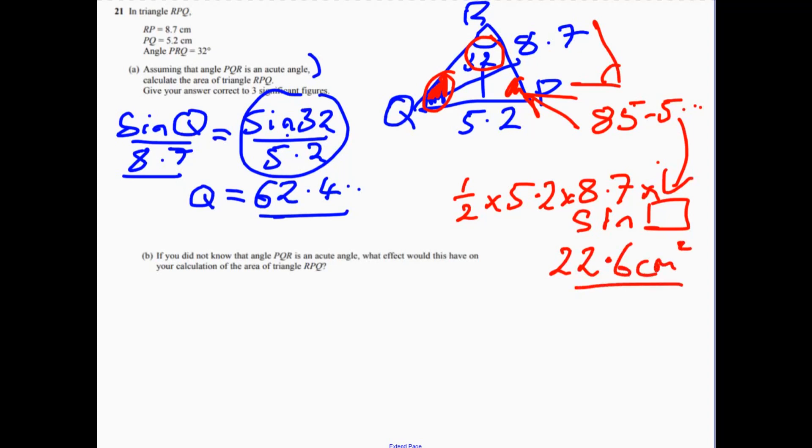Now, that was probably the easiest way of doing that question. It's not the only way of doing the question. You could have even chucked some cosine rule in there and worked out that side and worked out with a different angle. I think that would have made life a little bit harder, though.